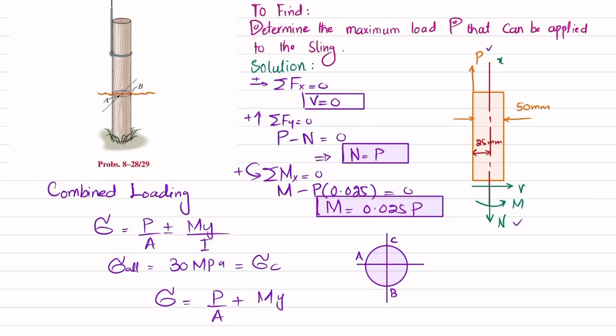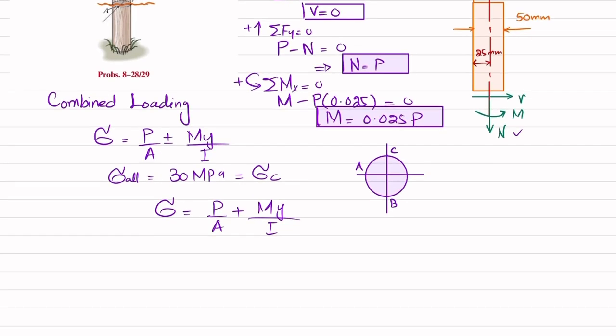Now you can put the value. P is not available, so P by A, A is pi R squared, so pi into R is... diameter is 50 mm, R is equal to 25 mm which is equal to 0.025 m squared, plus the moment which is 0.025 times P divided by I which is pi by 4 R to the power 4, so 0.025 to the power 4, times Y. Y is distance from neutral axis till point C.